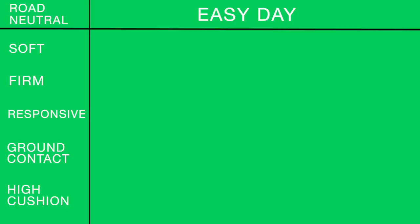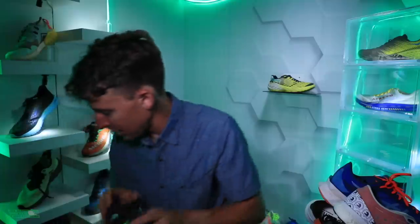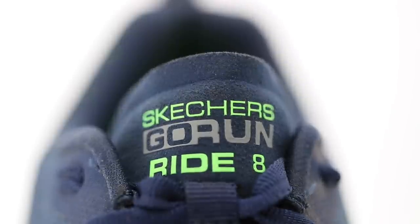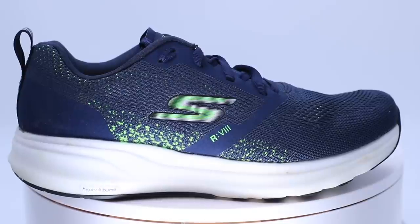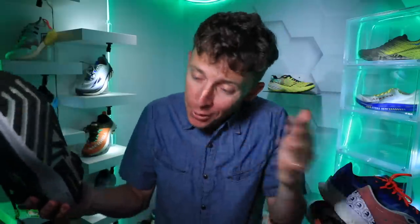First column — easy day shoe with a soft landing: the Nike Pegasus 37, 28mm in the heel, 18mm in the forefoot, $120. Moving on to easy day shoe with a firmer landing: the Skechers GoRun Ride 8, a little firmer through that midsole — 30mm in the heel, 24mm in the forefoot for a 6mm drop, $115. For responsive on easy days, I'm leaving it blank. On easy days I'm not looking for a responsive shoe; I want to bop along nice and easy, even doing a little heel striking.